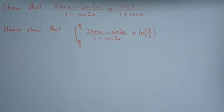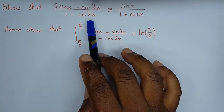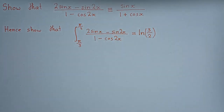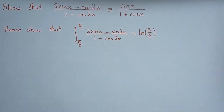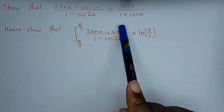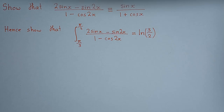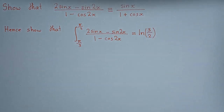Hi everyone. Today we'll look at this integration problem. We shall show the first part by using trigonometric identities to show that the expression equals a simpler form, then prove that the integral equals the given result. Once we show the identity, we substitute it into the integral. Then we bring in the upper and lower limits to arrive at the final answer.